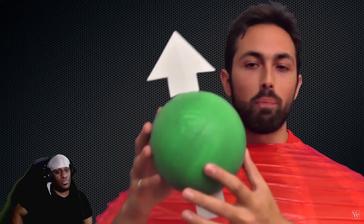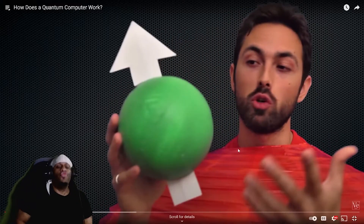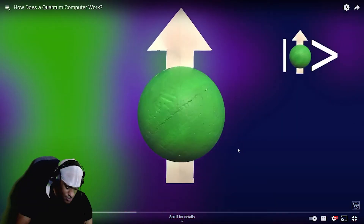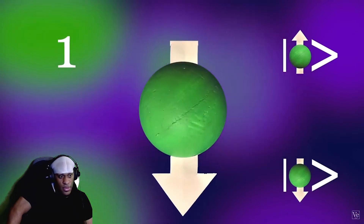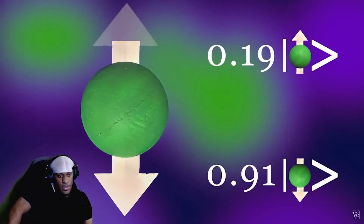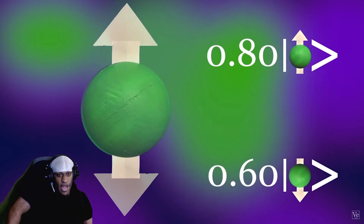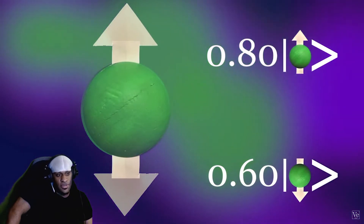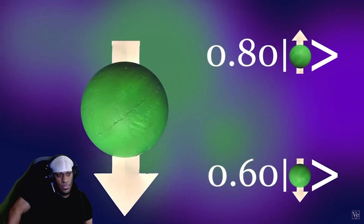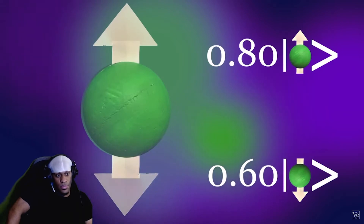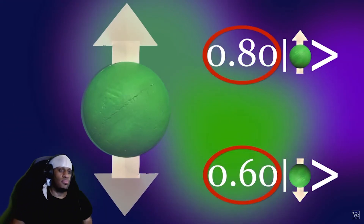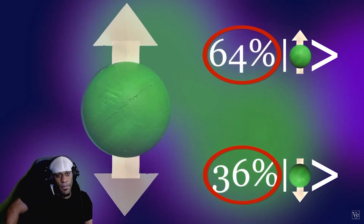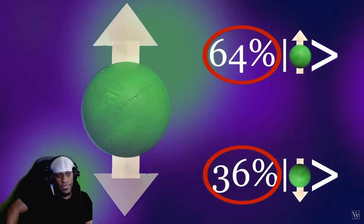So far this is basically just like a classical bit — it's got two states, spin up and spin down, which are like the classical one and zero. But the funny thing about quantum objects is that they can be in both states at once. When you measure the spin it will be either up or down, but before you measure it the electron can exist in what's called a quantum superposition, where these coefficients indicate the relative probability of finding the electron in one state or the other.